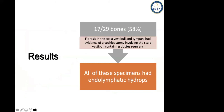It was clear from that study that involvement of the ductus reuniens by fibrosis or new bone formation was critical. Especially when we try to preserve hearing in the lower frequencies, every effort should be made to put the electrode through the round window, because the amount of fibrosis and new bone formation is quite different.